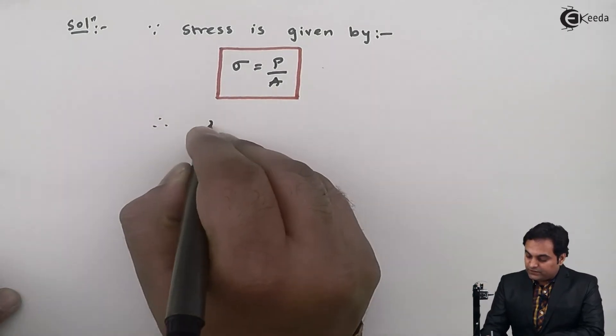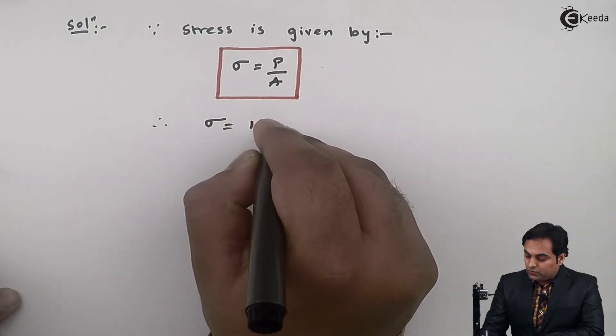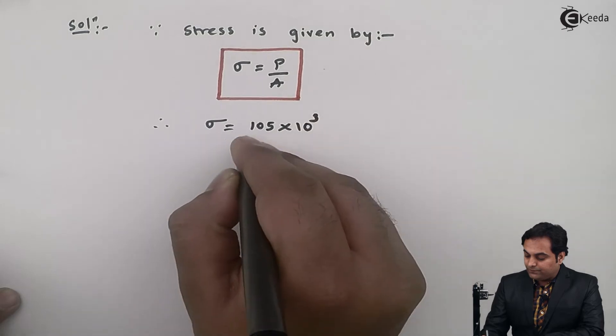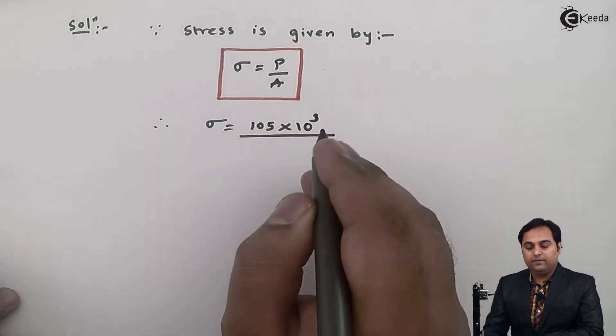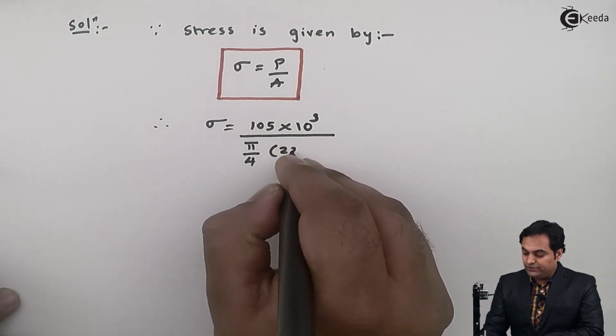So here I'll write down this stress σ will be equal to P is 105 × 10³ Newton, area is π/4 × diameter which is 22 squared.